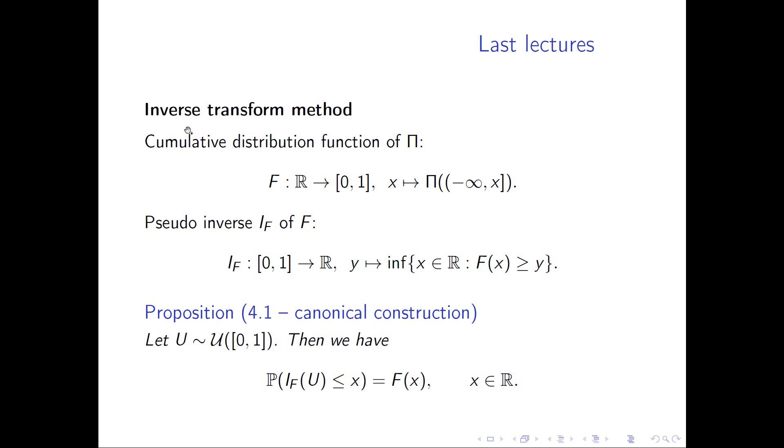The inverse transform method relies on knowledge of the cumulative distribution function of the distribution which we want to sample from. We want to sample from π, and F is the corresponding distribution function. What we also need is the pseudo inverse I_F of F. F doesn't need to be classically invertible, but we can always compute this pseudo inverse.